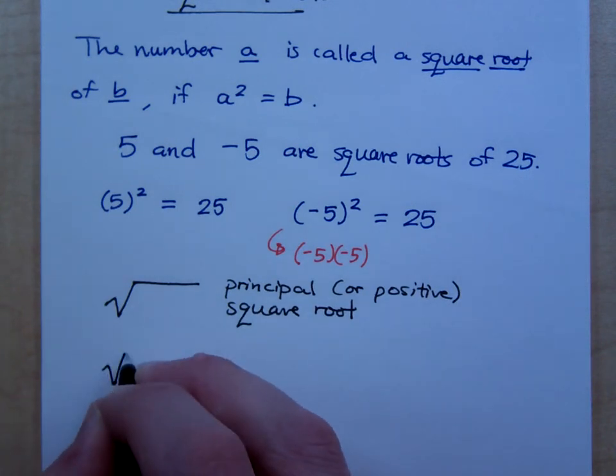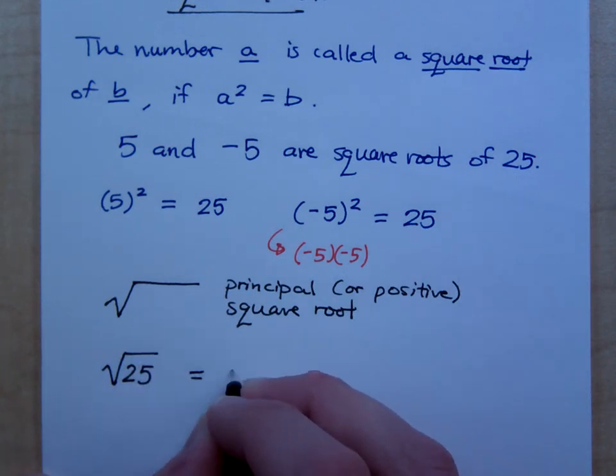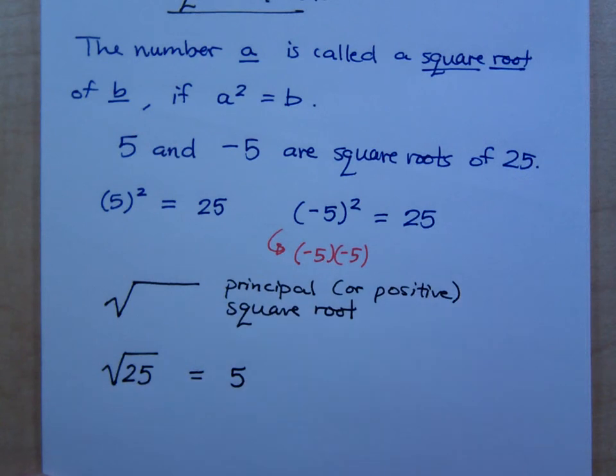I use this symbol for finding the positive or the principal square root. So if I were to say the square root of 25, that means what would you square to get 25, and what would you guys say? 5. And you may say, wait a minute, I thought negative 5 squared would equal 25. That is true, but when I use this symbol right here, this means just the positive square root. If I were to just say, using words, what are the square roots of 25, you would say 5 and negative 5. But when I use this symbol here, what is the square root of 25? Positive 5.